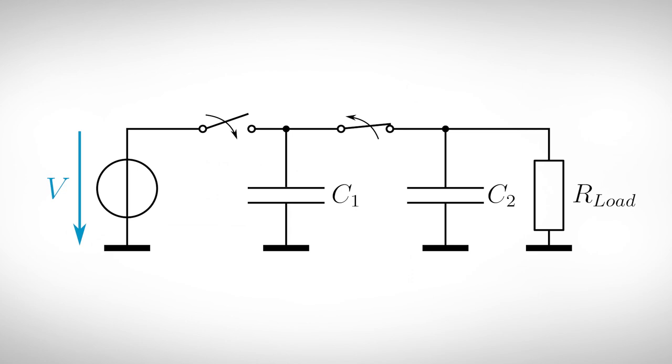If we add two switches to the circuit and open and close them alternately, we have successfully created a circuit that halves the input voltage.